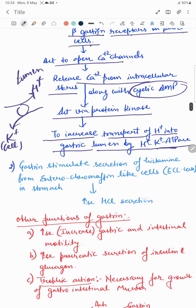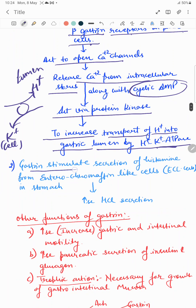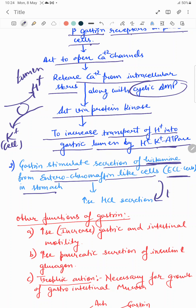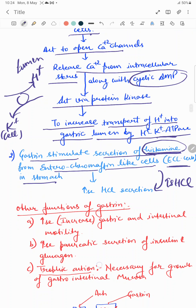Another important function of gastrin is to stimulate the secretion of histamine. This histamine is released from enterochromaffin-like cells, also known as ECL cells, and this increases the secretion of HCl. Histamine is an important substance that increases HCl secretion.